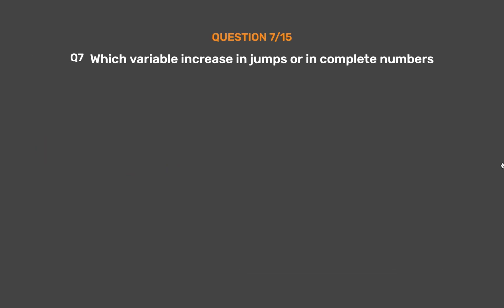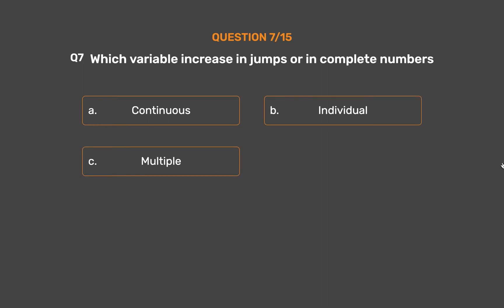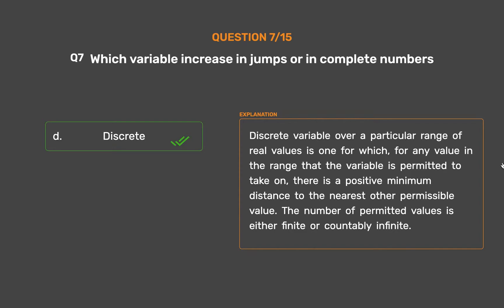Question number 7. Which variable increases in jumps or incomplete numbers? Option A: Continuous. Option B: Individual. Option C: Multiple. Option D: Discrete. The correct answer is Option D: Discrete. A variable over a particular range of real values is one for which, for any value in the range that the variable is permitted to take on, there is a positive minimum distance to the nearest other permissible value.